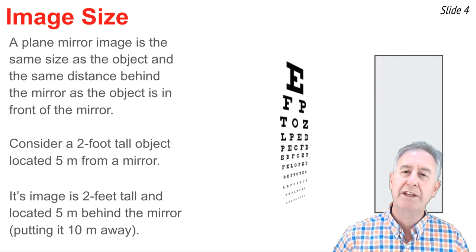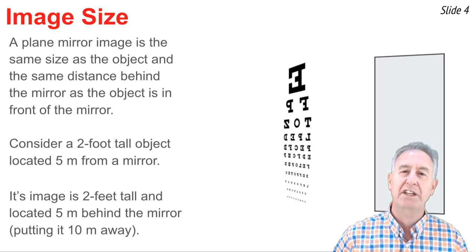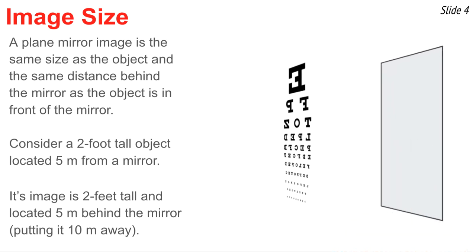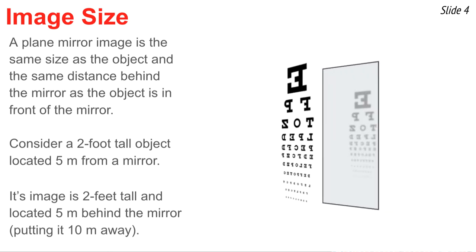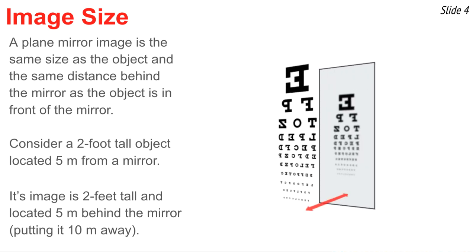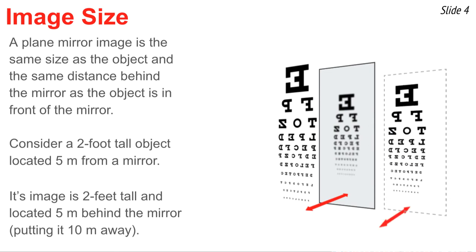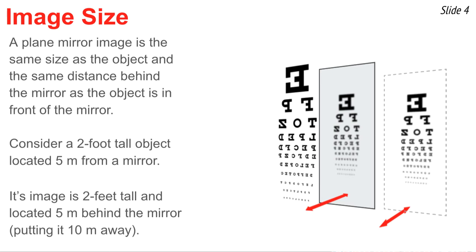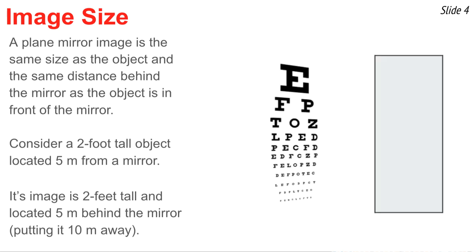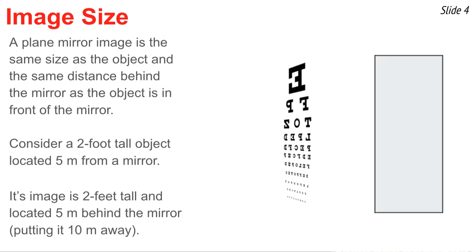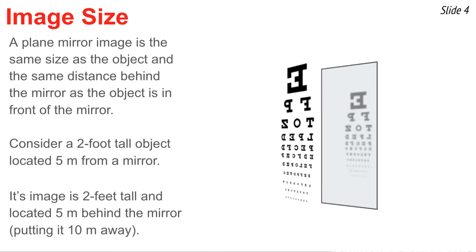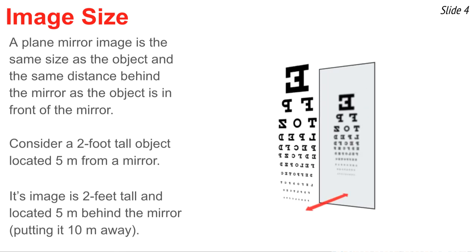There's an experiment that's often done to illustrate this idea, using two different eye charts and a plane mirror. You hold the eye chart up in front of the plane mirror, and you position it just perfect so you can see the image. Then you have a friend take a second identical eye chart of exactly the same size and begin to walk it away from you. You inspect that second eye chart and compare its size to the size of the image that you see in the mirror. Now the image appears smaller only because it's 10 meters away from you.